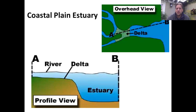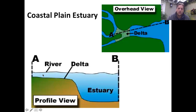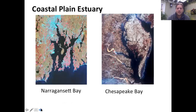A couple of features of the coastal plain estuary: first, there's going to be a delta right where the river meets the ocean. That delta forms because tides are pushing back a little bit, the water is slowing down, and sediments that were carried by the river are going to fall to create that delta. The most classic example is the Chesapeake Bay.